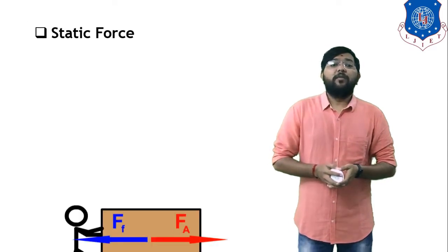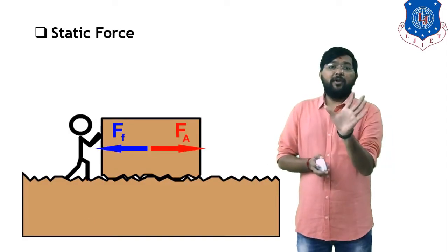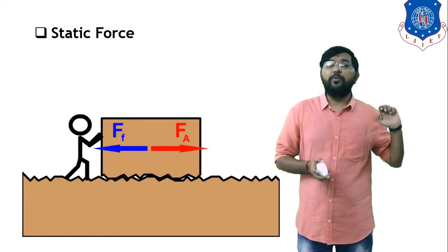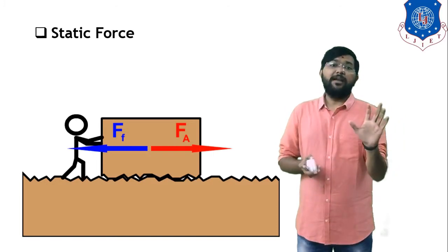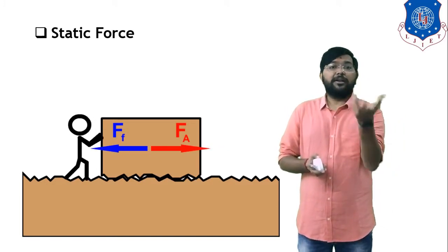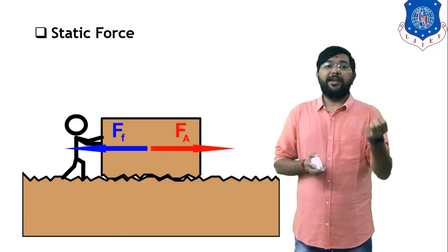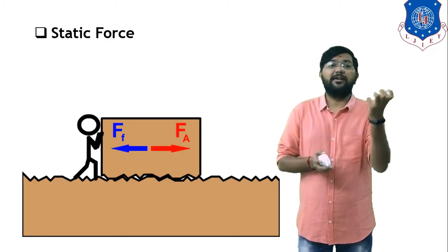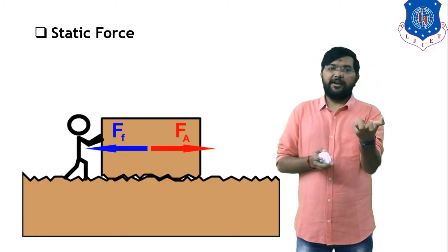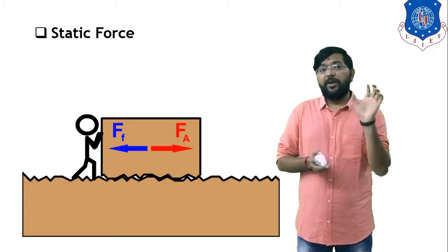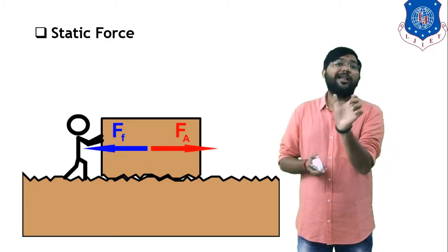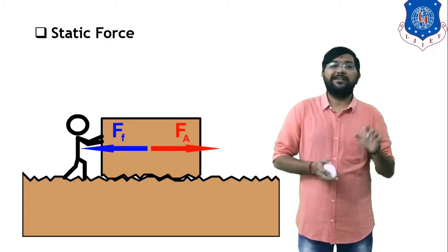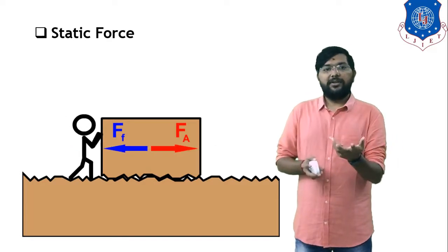An example of Static Force: there is a man trying to push an object, but the object tries to maintain its steady condition — it tries to remain rigid. You apply force but the body does not get any displacement. This type of force is considered Static Force.